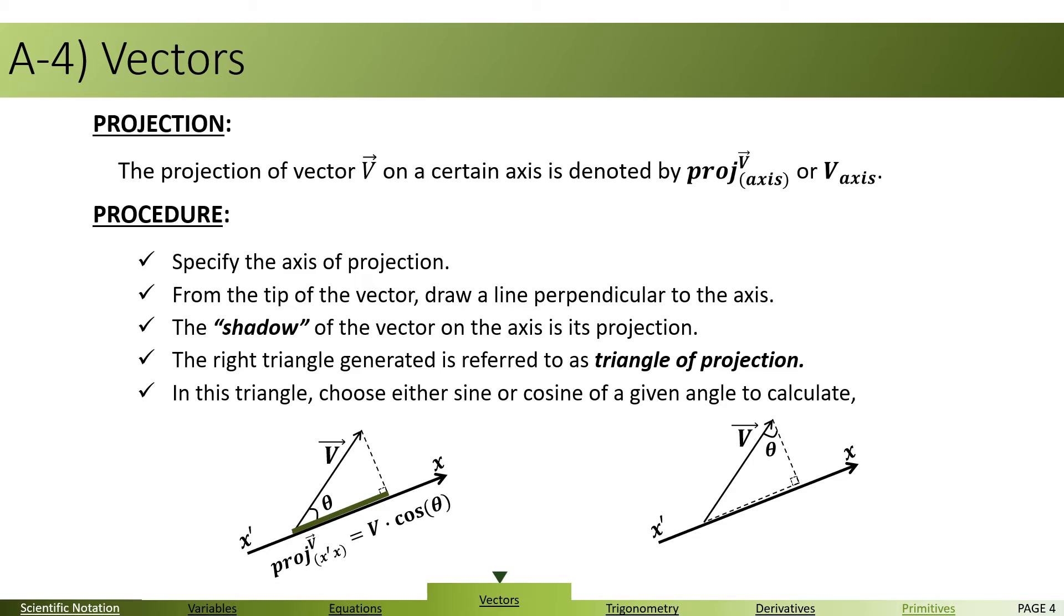Consequently, looking at the figure here, you notice projection of V on X axis is V cosine theta. You can write this as Vx, because the name of the axis is X. Similarly,